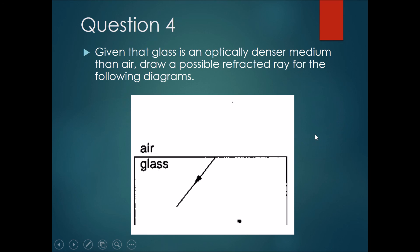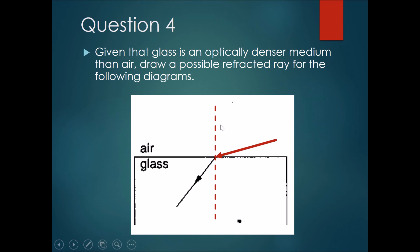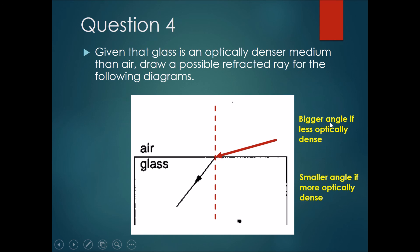Once again, where should you draw the line from air if you see the ray in glass? Draw the normal line first, then draw an angle in air that is larger than the angle in glass — because the bigger angle in air is due to it being less optically dense, and the smaller angle in glass is because it is more optically dense.